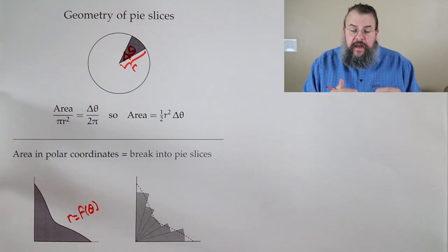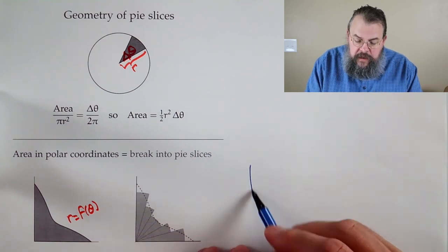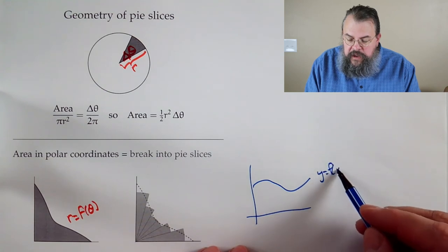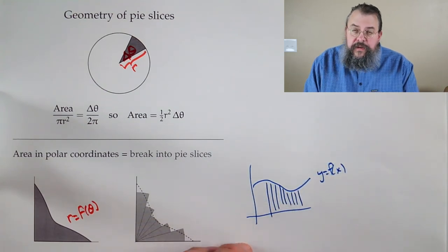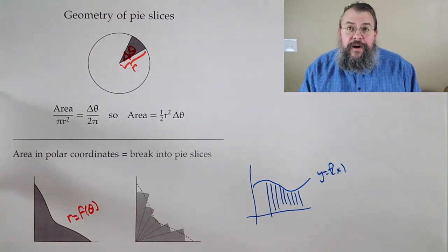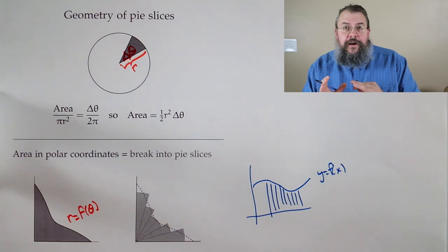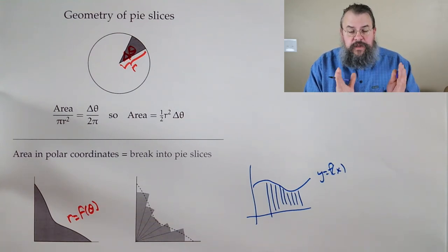Now, when we had y equals f of x, how did we break things up? Well, the idea is we'd say, well, if we have y equals f of x, we would break things up by saying, let's break our input into small pieces. So in other words, we're breaking our x into small parts. And see, what do we get? Here, when we think of r as a function of theta, what we'll do is we'll break our theta up into small parts.